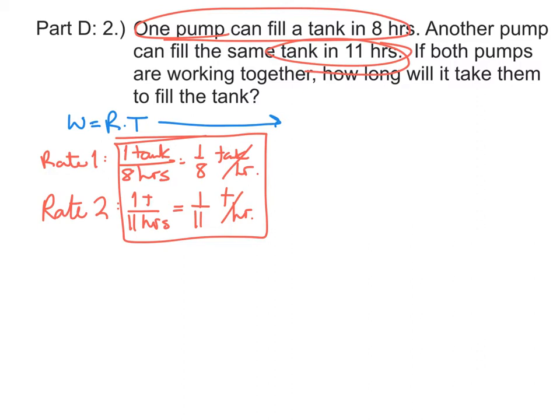So for the first pump, its rate is 1 eighth of a tank per hour, multiplied by however much time it's going to take both of them working together. And the second pump is going to get some work done too. It will get 1 eleventh of a tank filled, times however many hours they're going to work together. All together, the amount of work that they'll do is fill one tank. So here's the equation that we need to solve.